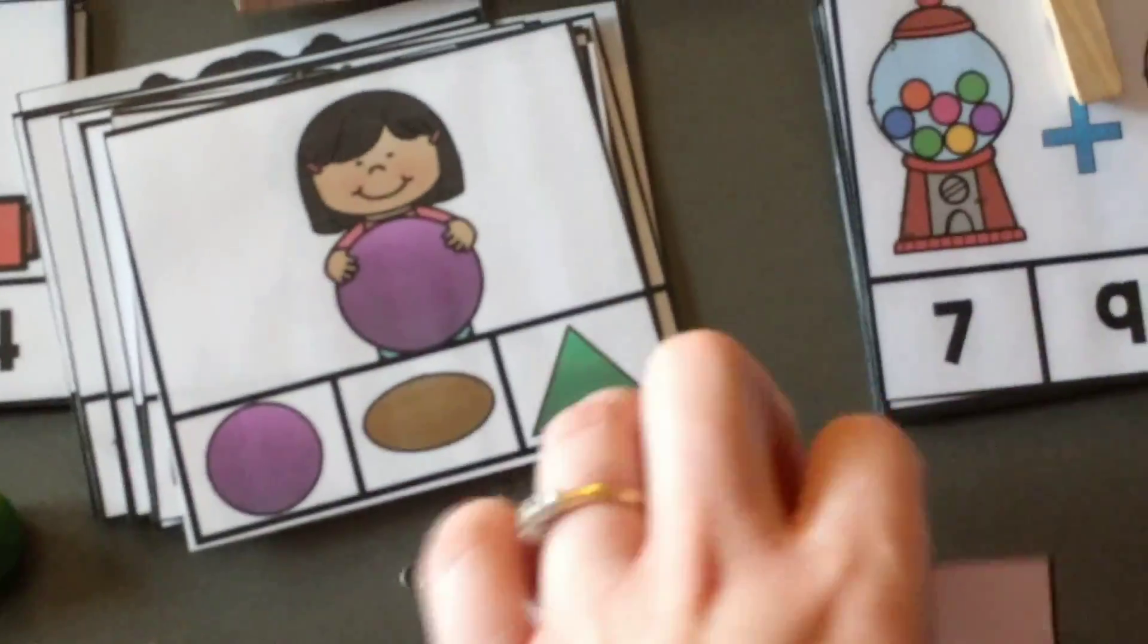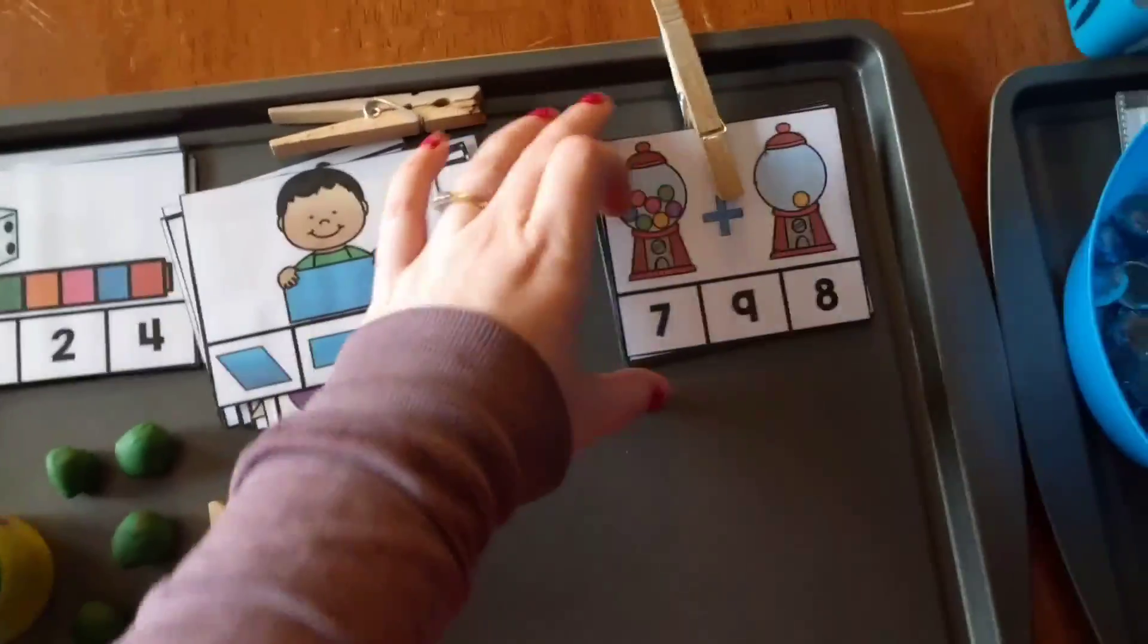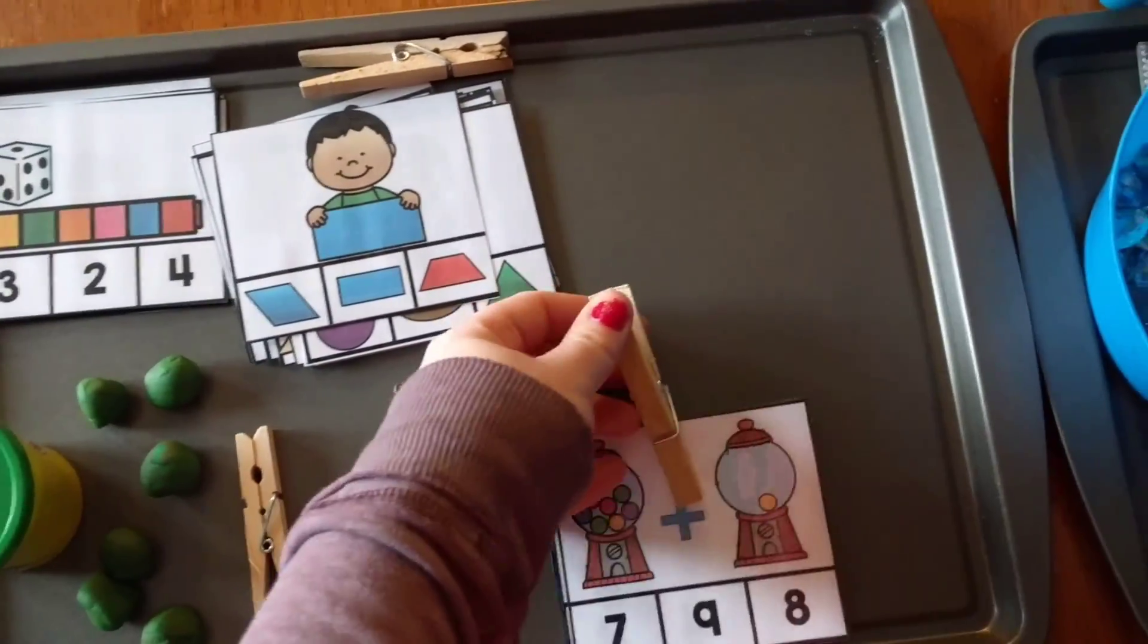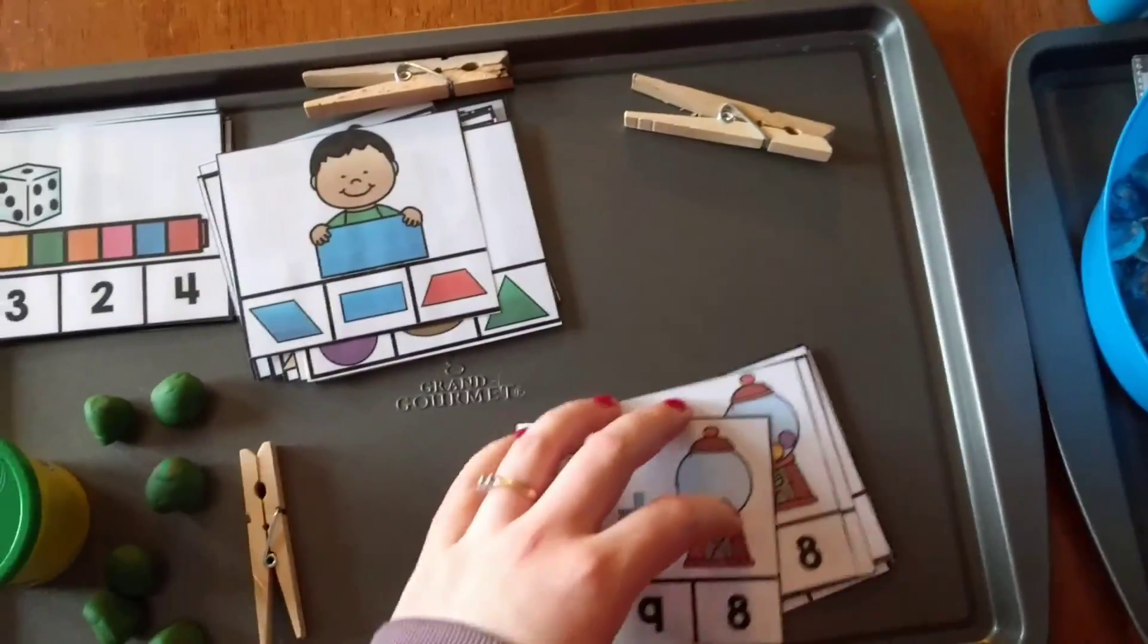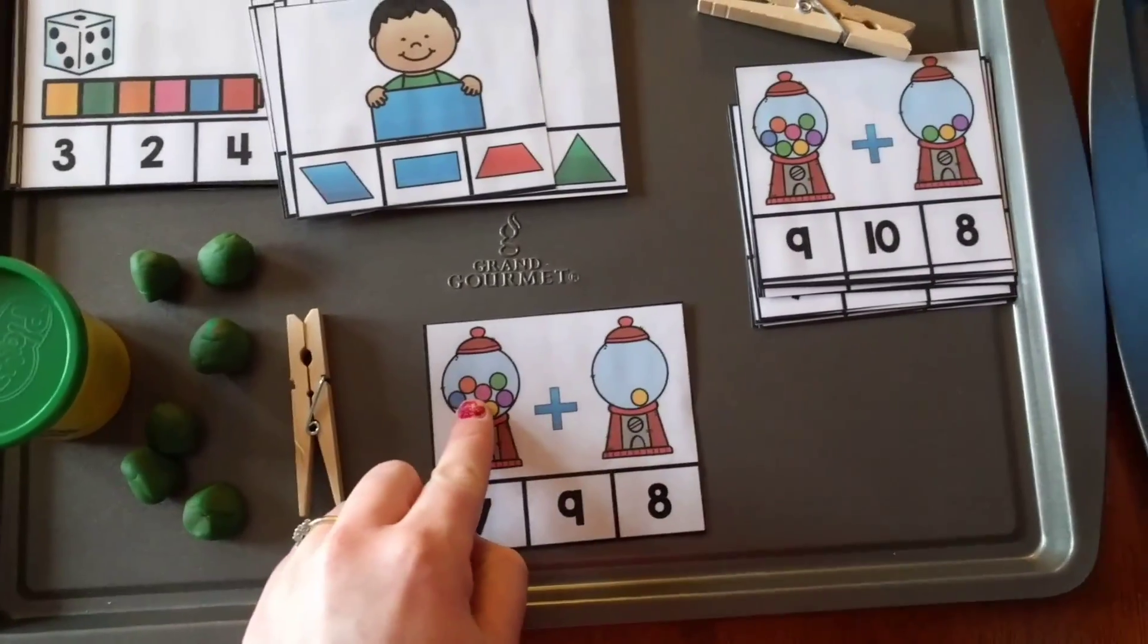So that is that set, his shapes, and then this set, I will have my kindergartner do these, and these I thought were really kind of fun. So basically for these, it's just addition.